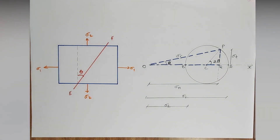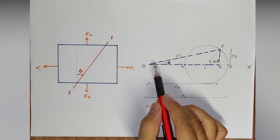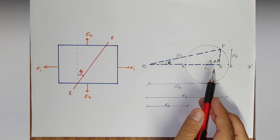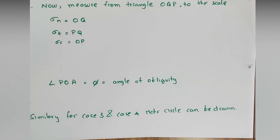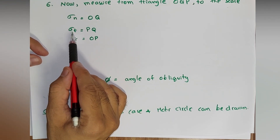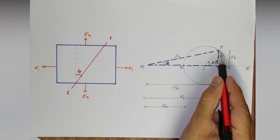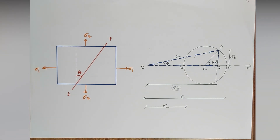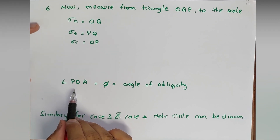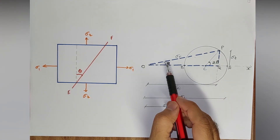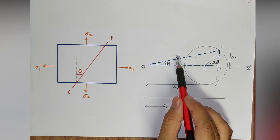Now we can measure all dimensions in triangle OQP. σn equals OQ — this is the normal stress; measure line OQ and multiply by the scale to get σn. σt equals PQ — this is the tangential stress; measure PQ and multiply by the scale. OP acts as the hypotenuse and gives the resultant stress σr. Angle POA, that is φ, is also known as the angle of obliquity.